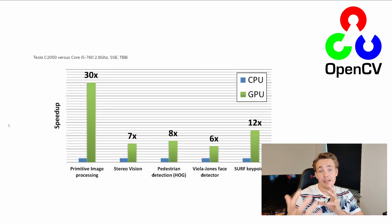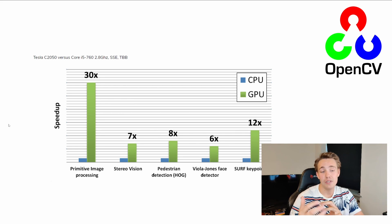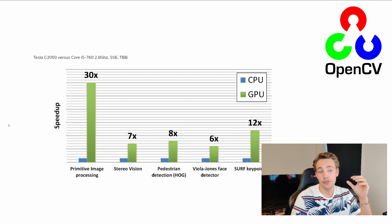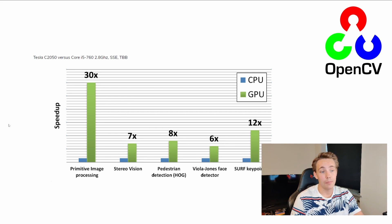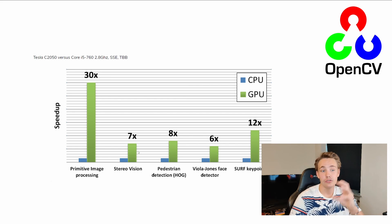So first of all, when we have this short introduction, let's talk about some of the differences between the CPU and the GPU. If we have real-time applications or we just want to speed up our methods and processes in our computer vision projects and learn how to use a GPU instead of only using a CPU, then we have a comparison here about the speed-up for some of the different computer vision techniques that we can use.